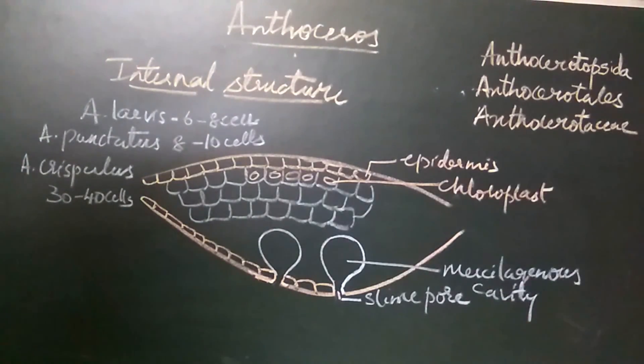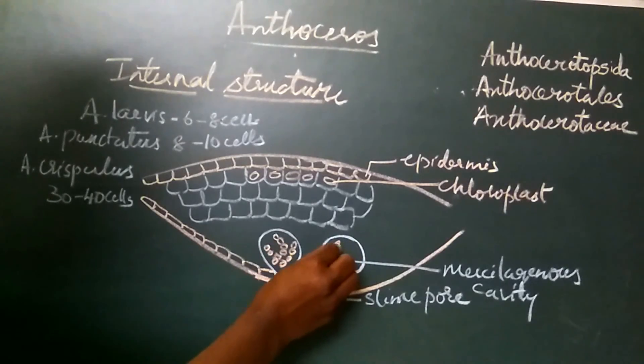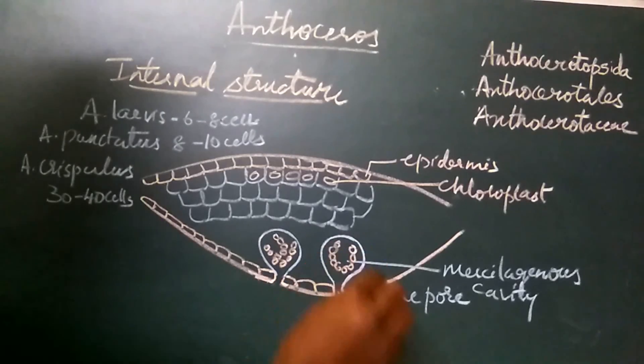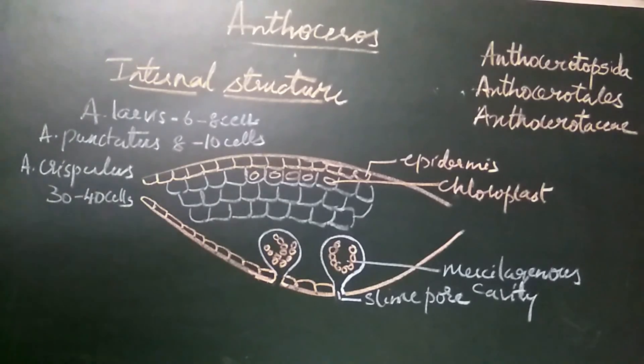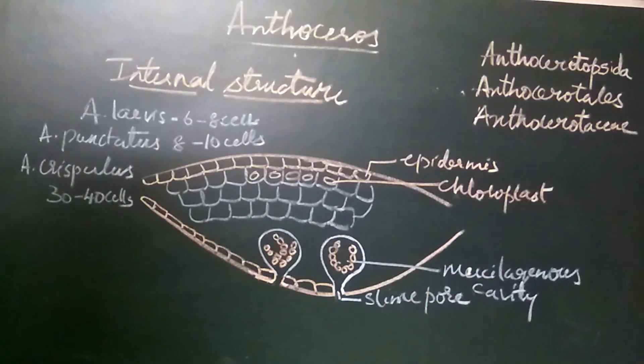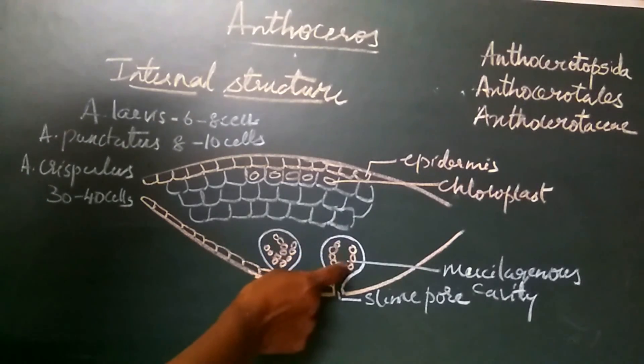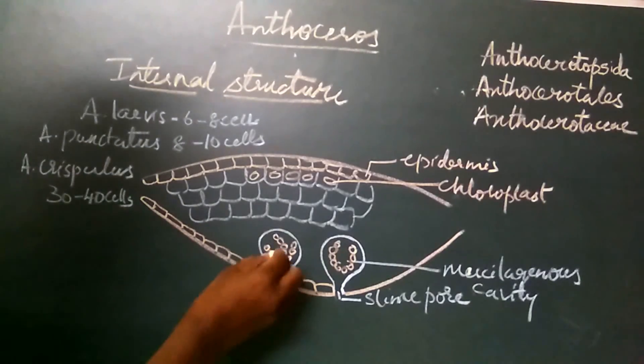The mucilaginous cavities are invaded by colonies of Nostoc. Nostoc is a blue-green algae. These blue-green algae invade the mucilaginous cavities and they remain there. However, there is no symbiotic association between the Nostoc and the thallus of Anthoceros. Anthoceros thallus can grow even in the absence of Nostoc colonies.